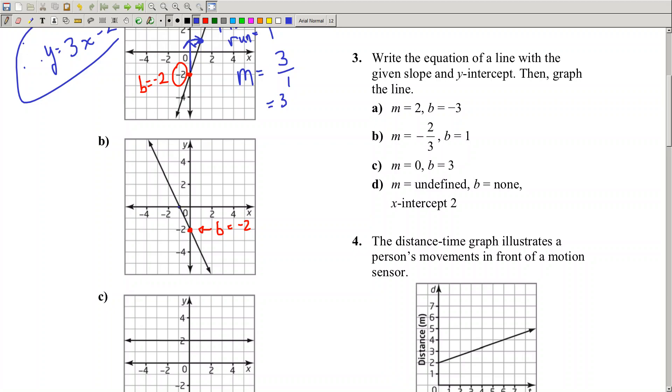There we go, this is called the x-intercept, by the way, because it's where the line crosses the x-axis.